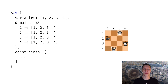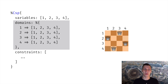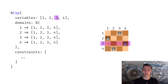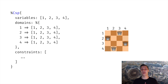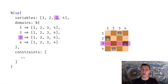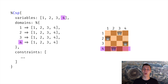To encode this as a CSP, we first choose our variables. Our variables will be row numbers, and the domains will be column numbers. So if you have both the row number and the column number, you know where the queen is placed. On this chessboard, the queen on top is placed on row 1, column 3. The next queen is on row 2, column 1. The third queen is on row 3, column 4, and the last queen is on row 4, column 2.